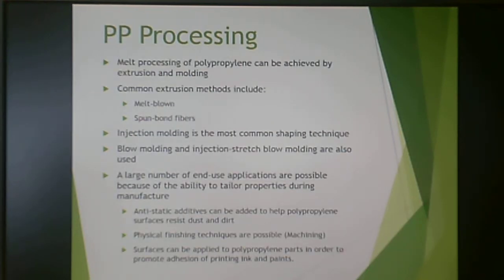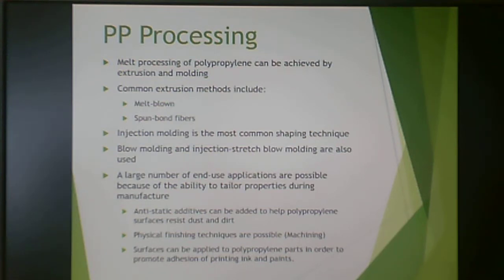Polypropylene is processed all of the ways that polyethylene is processed: extrusion, molding, and all sorts of things. It is also melt-blown and spun-bound into fibers. Typically, injection molding is the most common shaping technique. Blow molding and injection stretch molding are also used.